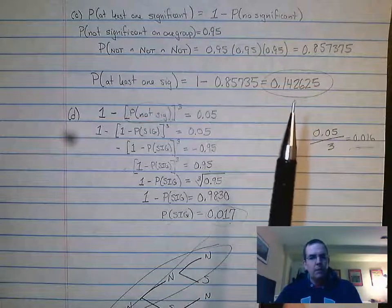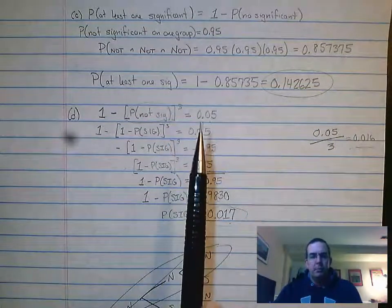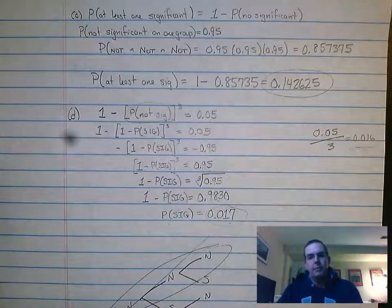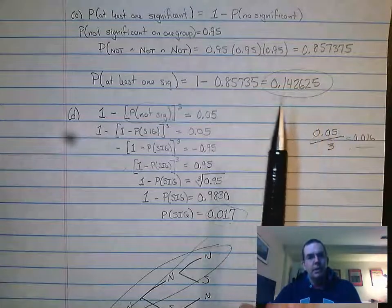So it happens quite often that we get at least one, or relatively often. What the problem said is we want to keep it under 5%. So we want to keep that total under 5%. So basically it's asking you,